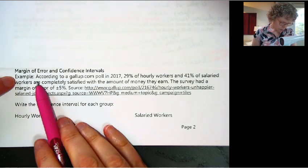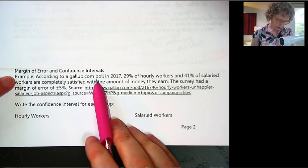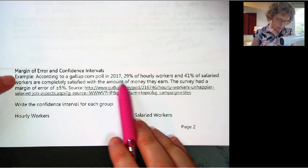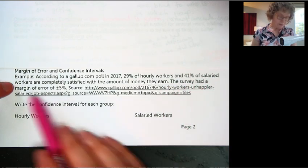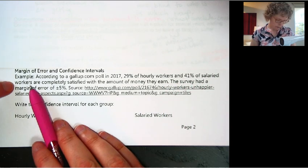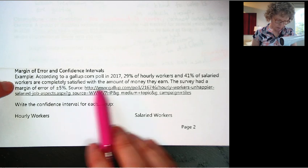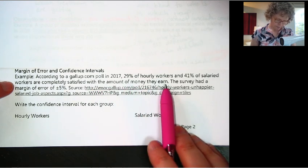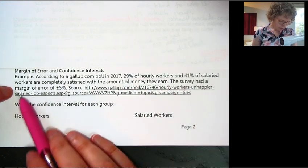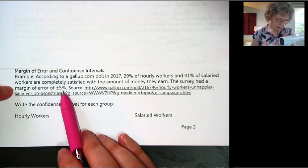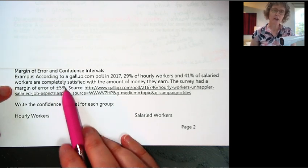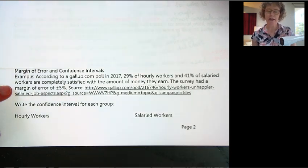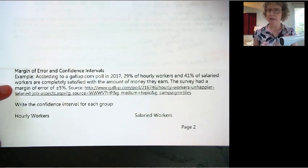So here's an example. According to a gallup.com poll in 2017, 29% of hourly workers and 41% of salaried workers are completely satisfied with the amount of money they earn. The survey had a margin of error of plus or minus 5%. Sometimes you don't even see the percent on there — it'll say plus or minus 4, plus or minus 2, and those mean percent.